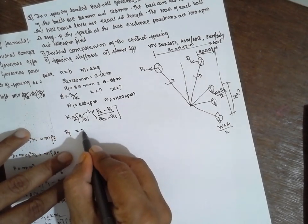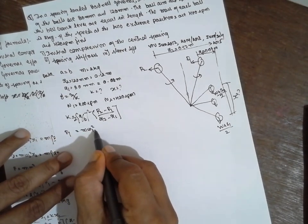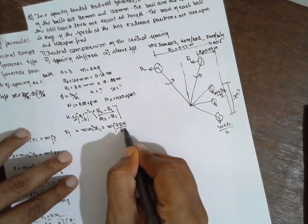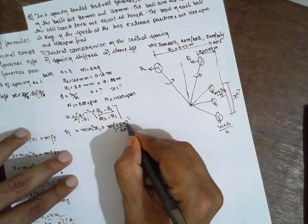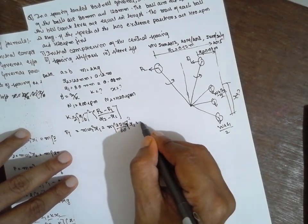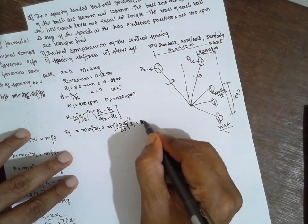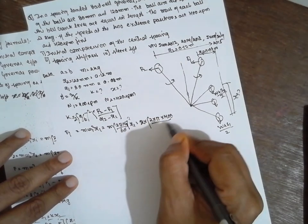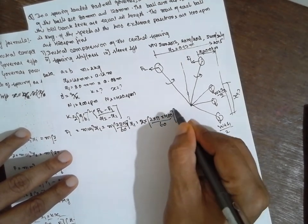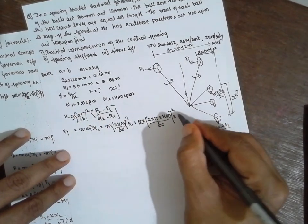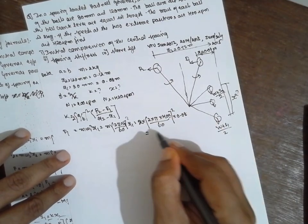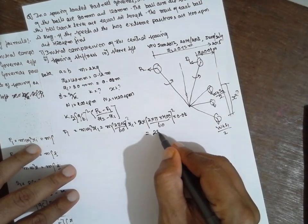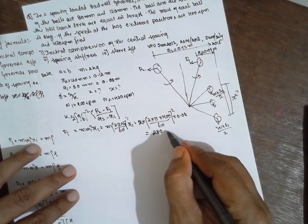Before this one you have to find out F1. F1 is equal to M omega 1 square R1. M 2 pi N divided by 60 whole square N1, it is N1 whole square R1. What is M value? 2 kg. 2 into 2 into pi, N1 is nothing but 400 divided by 60 whole square, R1 will be 0.08. Answer will be F1 will be 280.735 N.